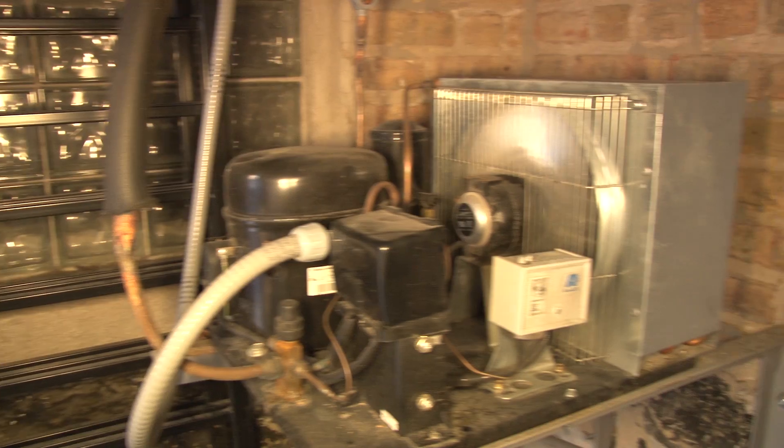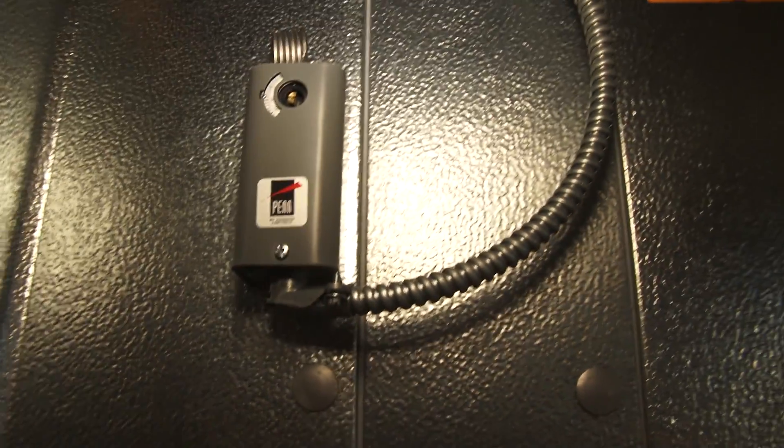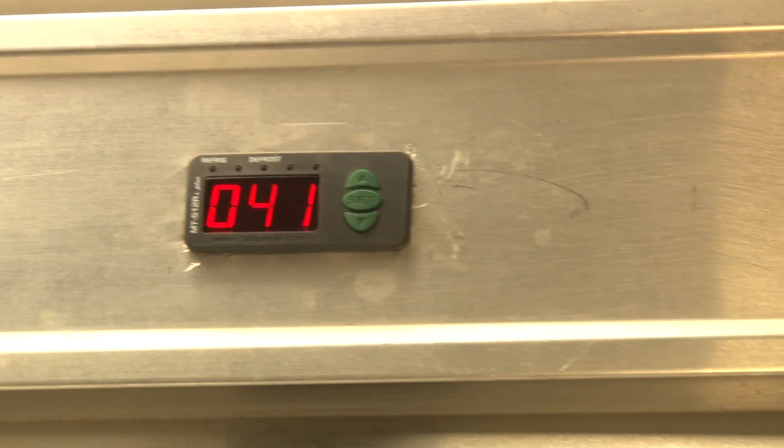Refrigeration equipment makes up more than half of the electric bill in a restaurant or supermarket, so saving energy has become a top priority. And the easiest way to save more energy is to upgrade to a digital temperature controller.